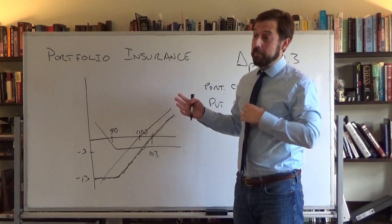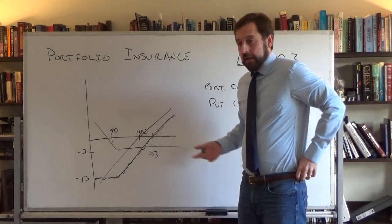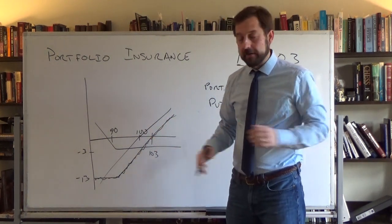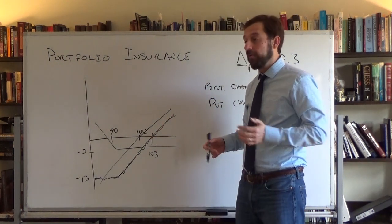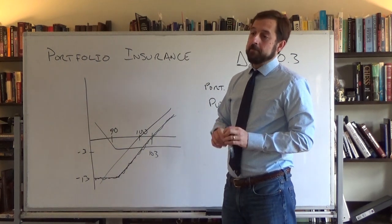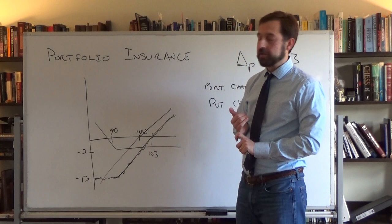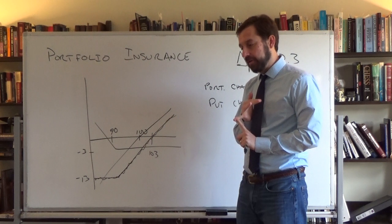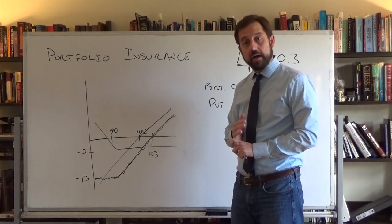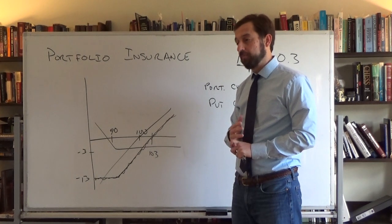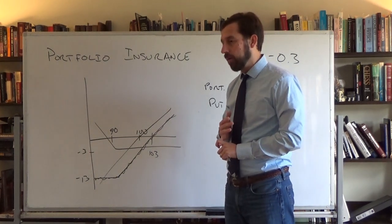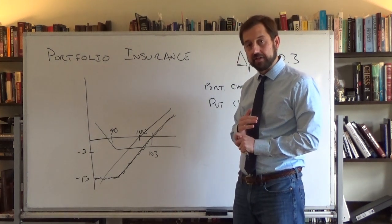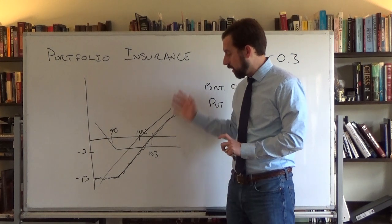Now, before we jump in — why may you not have a put to trade? One, you may want to protect your portfolio over a period of time for which put options don't exist. Also, if your portfolio is similar to the S&P 500 or NASDAQ, you can buy an index option. However, your portfolio may be dissimilar to any index, which would mean you'd have to buy options on individual stocks in your portfolio — which is prohibitive from a transaction cost standpoint. So options for your portfolio may not exist.